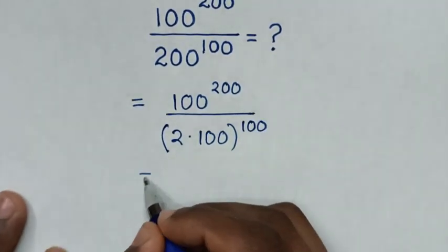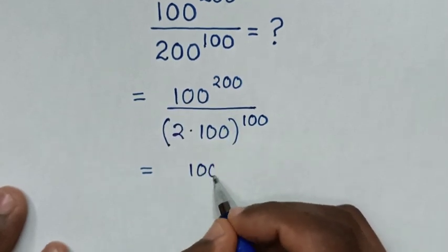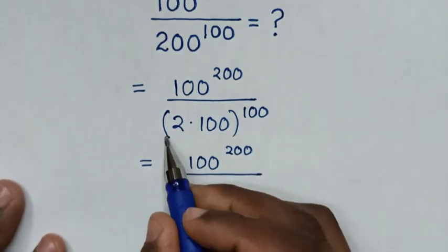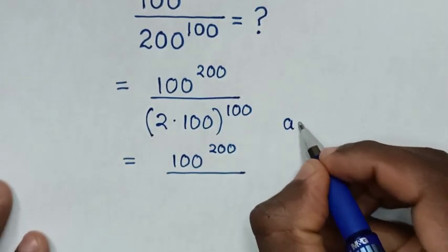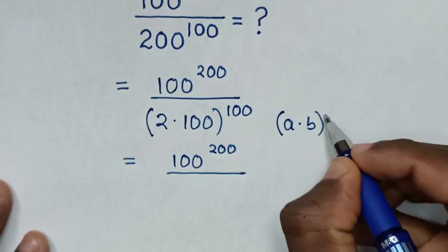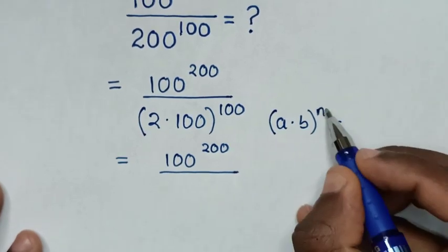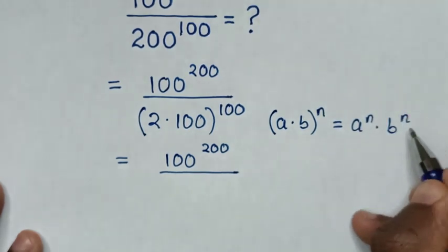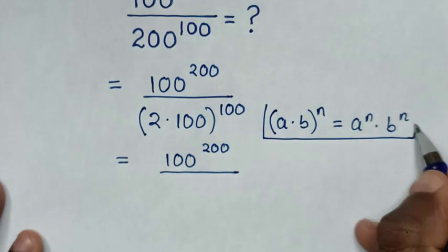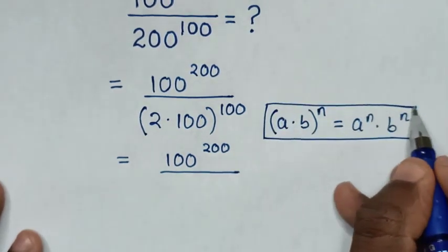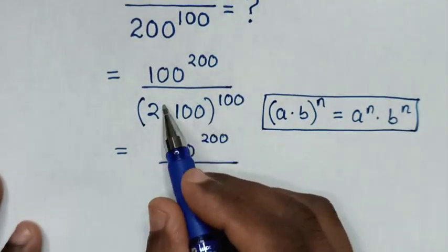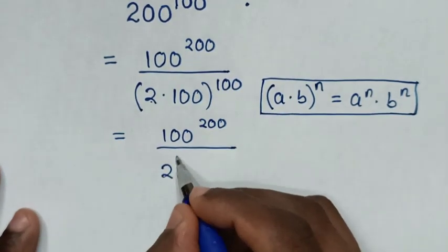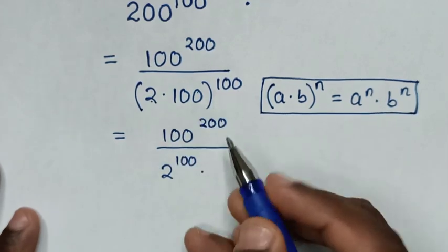Then, in the next step, it will be equal to 100 power of 200, then over — from here in the denominator, it is in the form of (a times b) bracket power of n, which equals a power of n times b power of n. So we take this power inside the bracket, and it will be 2 power of 100, times 100 power of 100.